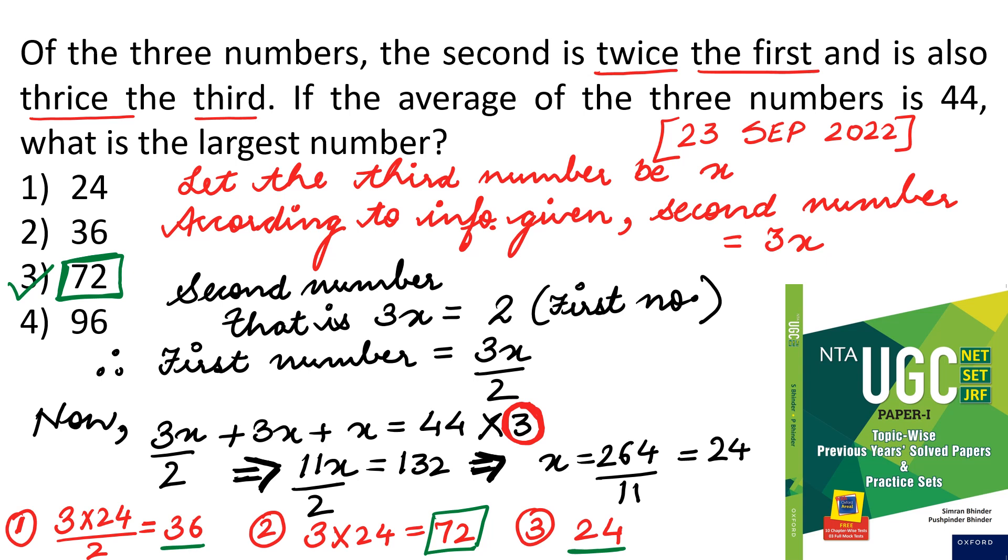Into 3 because there are 3 numbers there. So average has been multiplied by 3 numbers, so you are getting total sum of all the 3 numbers. So it means, 11x upon 2 is equal to 132. Now, when we solve this, x comes out to be 24.